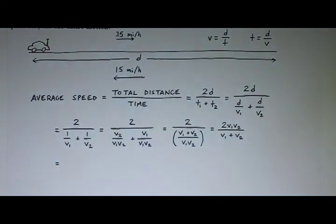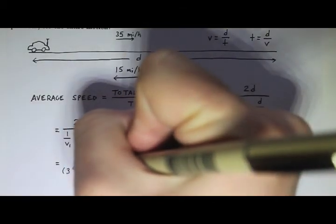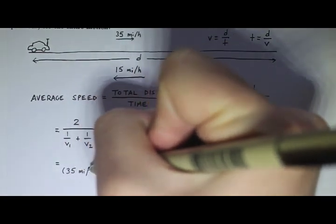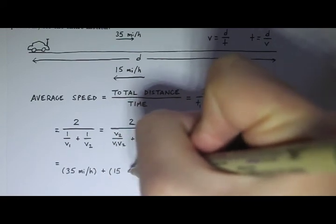V1, that's 35 miles per hour. Now you could switch this into meters per second. But since everything is in miles per hour and we want the answer in miles per hour, we'll just leave everything in miles per hour. So V1 is 35 miles per hour. And V2 is 15 miles per hour.